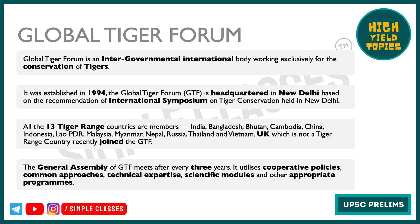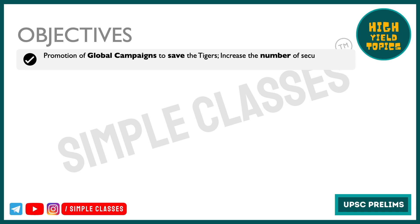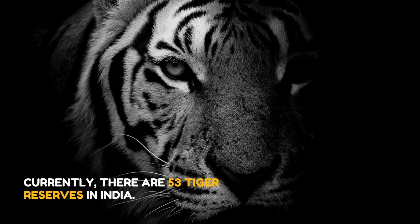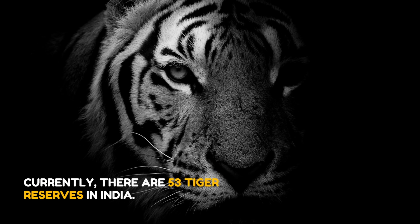Now let us look at the objectives of the Global Tiger Forum — kin-kin cheezo mein ye forum busy rehte hai. First of all, promotion of global campaigns to save tigers. Tigers ko bachane ke liye jo global campaigns hotte hai, unko promote karne ka kaam kerti hai, so that maximum number of habitats can be secured for tigers.